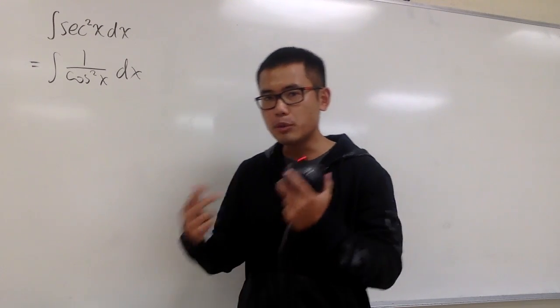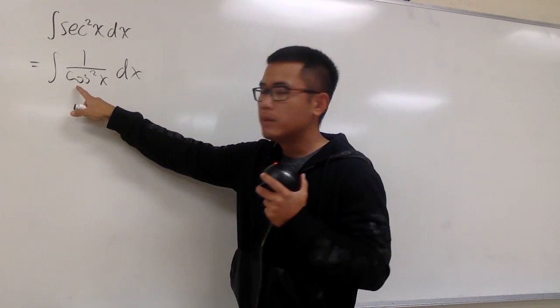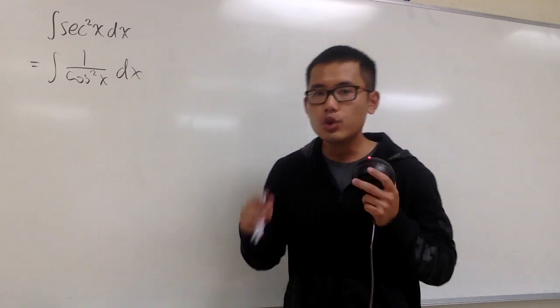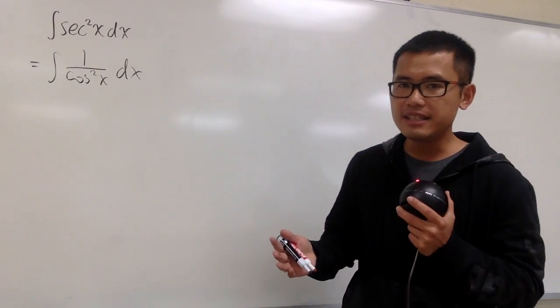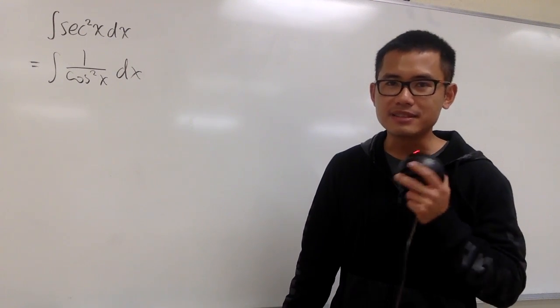However, I still want to come up with more things to work with. Here we have 1, and on the bottom, we have cosine squared x. Do we know any identities that enforce the 1 and also cosine squared x and maybe something else?